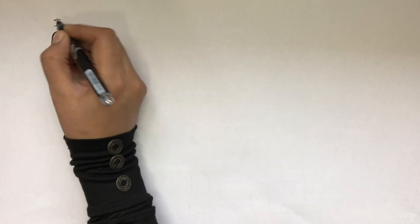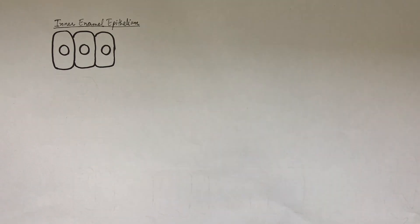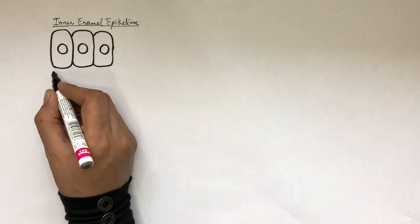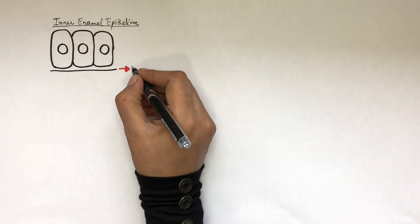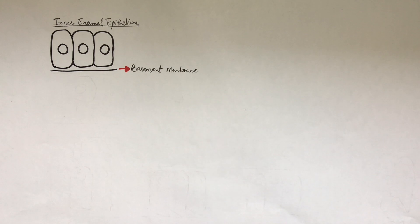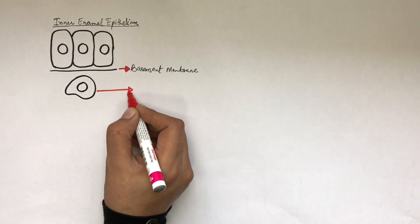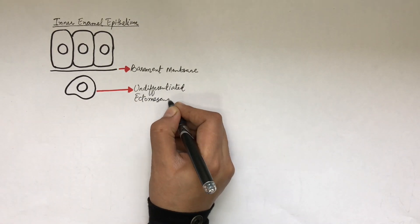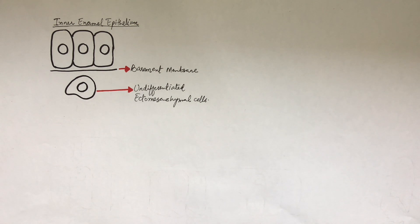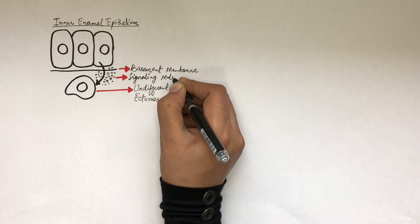Dentinogenesis, or the process of dentine formation, occurs at the late bell stage by the differentiated cells of the dental papilla called odontoblasts. The differentiation of the underlying cells of the dental papilla into pre-odontoblasts occurs under the influence of the signaling molecules and growth factors released from the undifferentiated cells of the inner enamel epithelium.